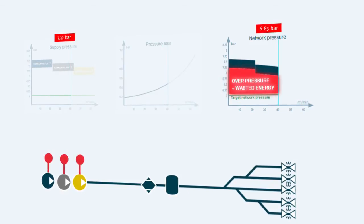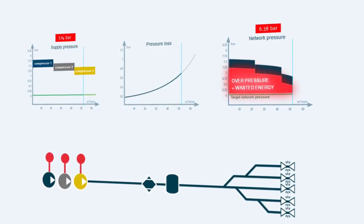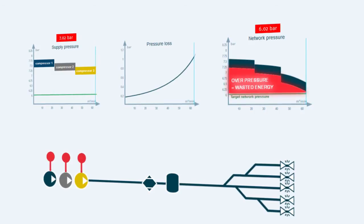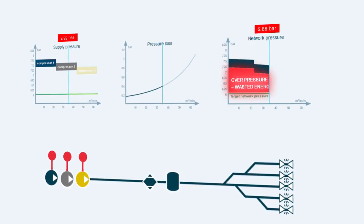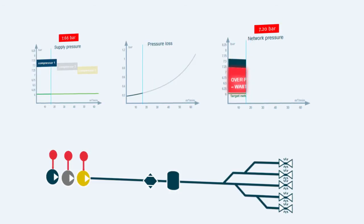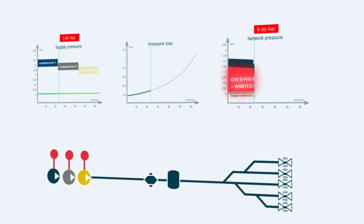Energy is wasted in two ways. The compressors consume more energy, as they need to work against a higher pressure, and air consumption increases, as the machinery uses more compressed air when the pressure is high.